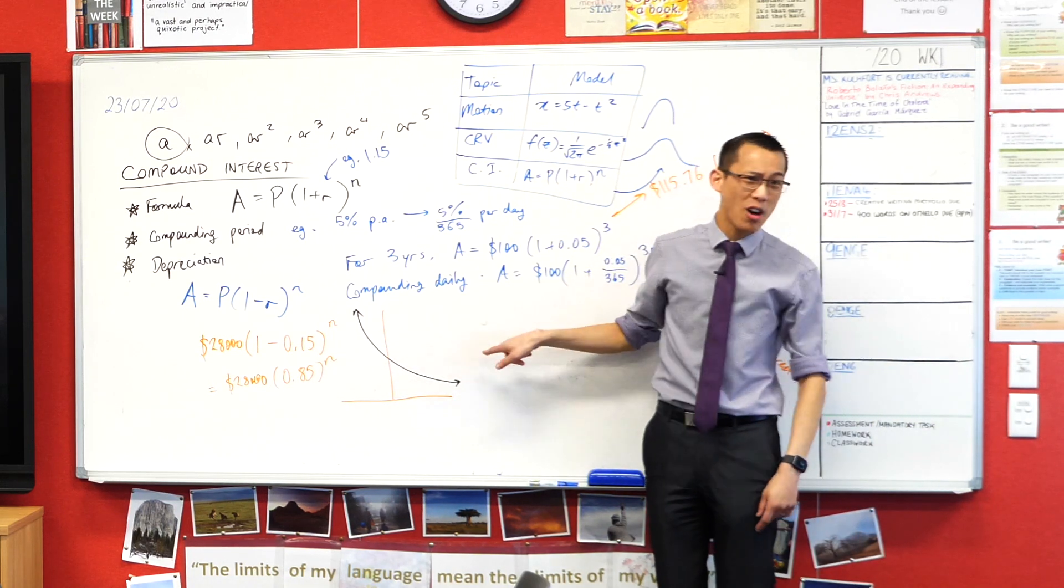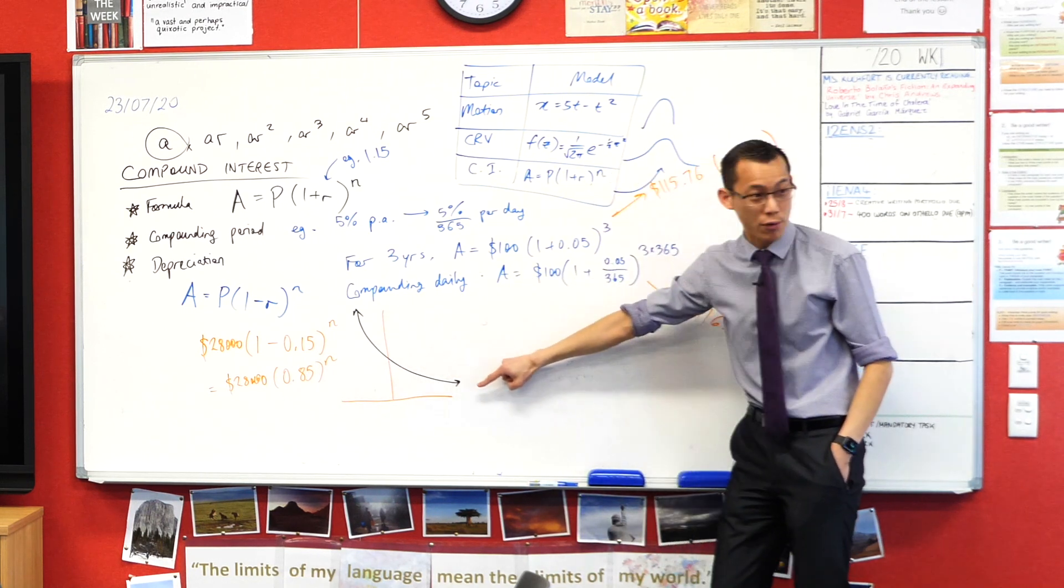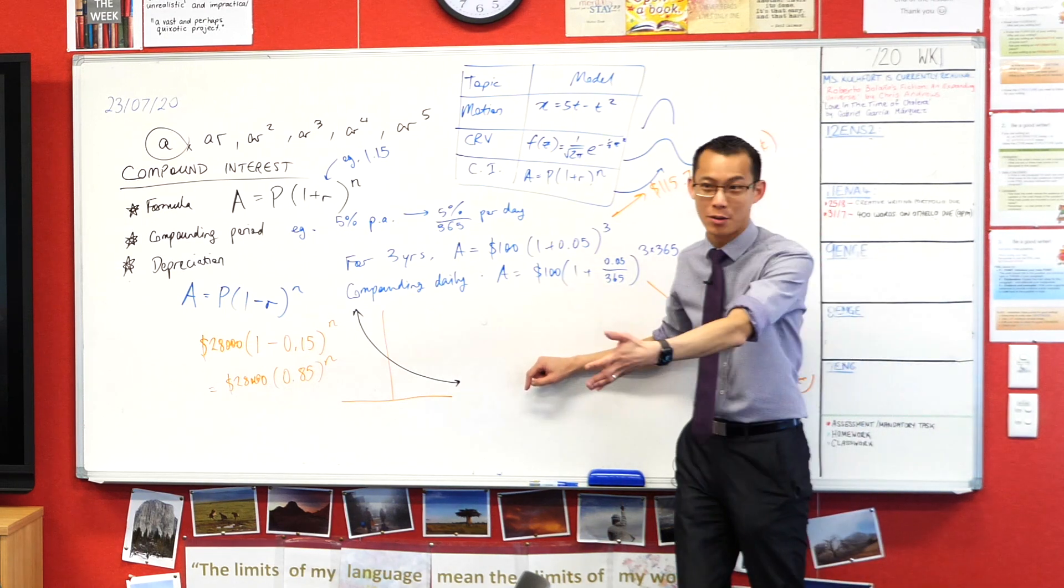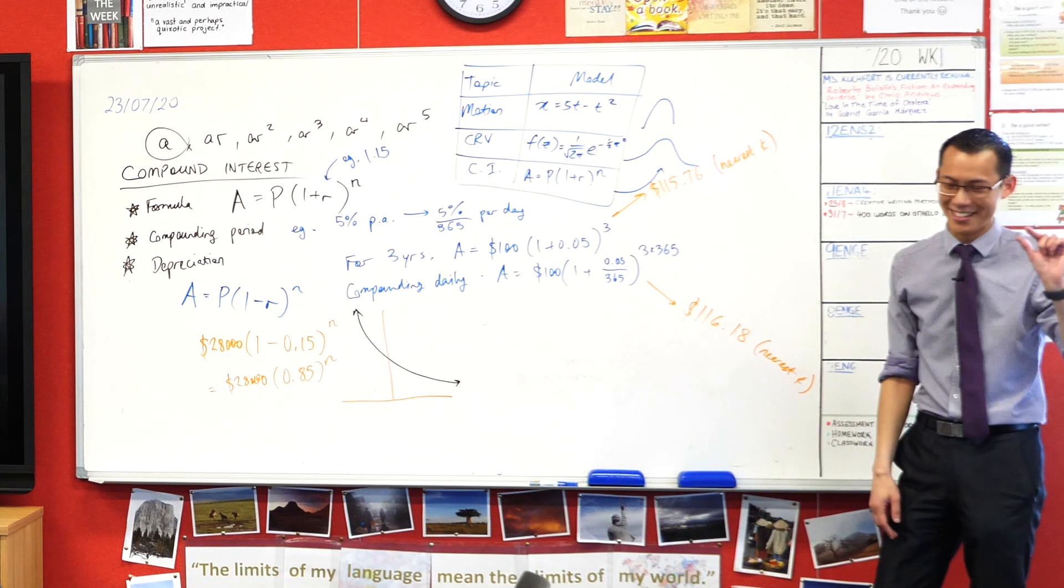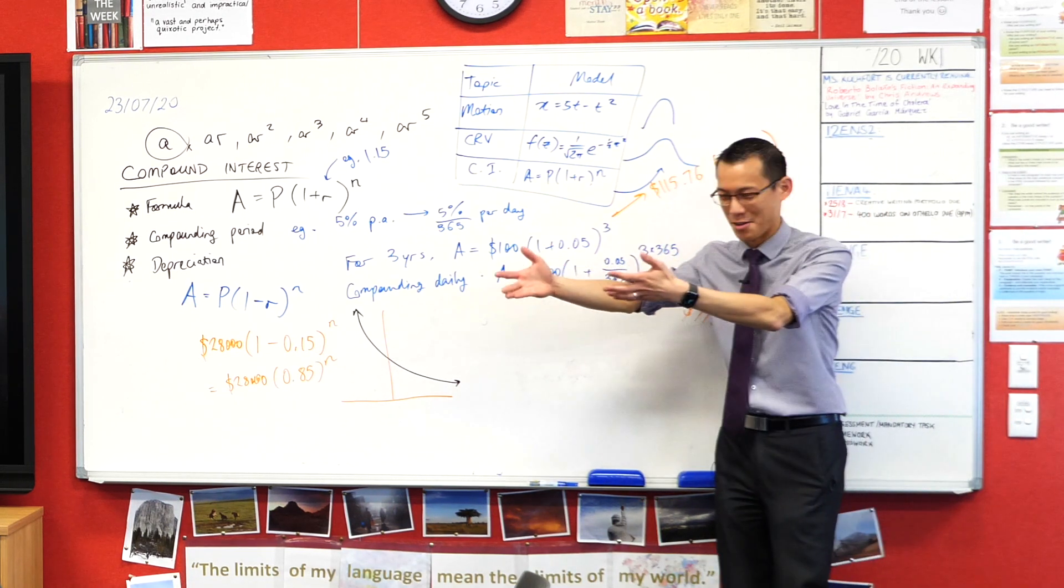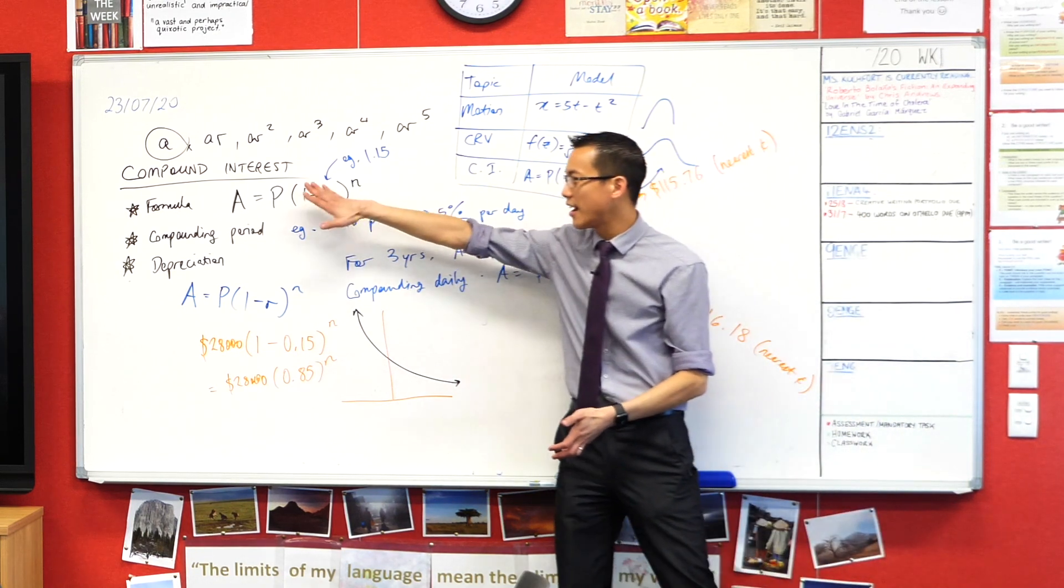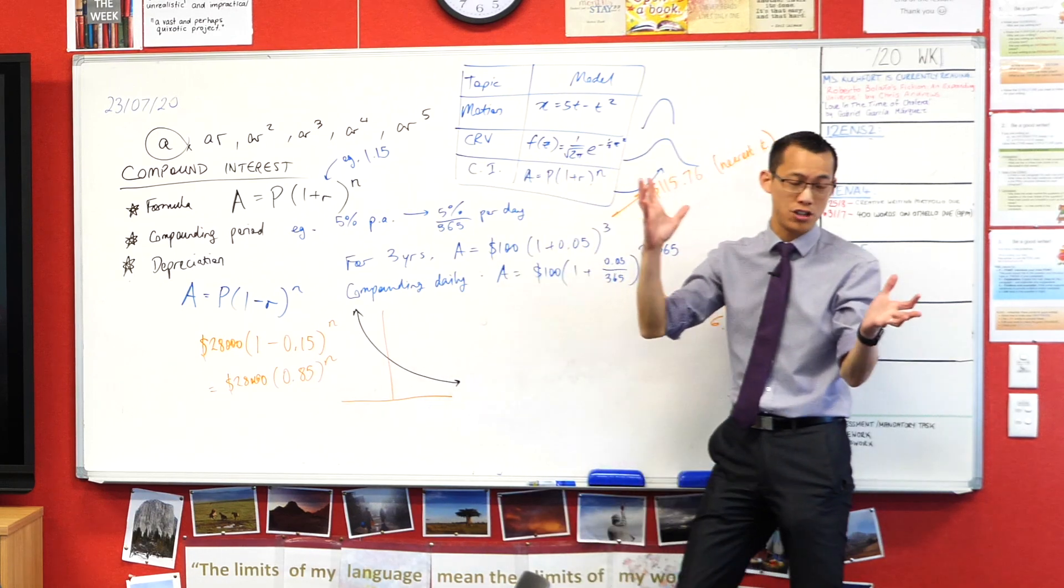The only problem is, coming back to Max's idea, this is a model. This is not actually what's going to happen in reality. After a certain number of years, even though this thing approaches zero, my Corolla will literally be worthless. I'd have to pay someone to take it away because it'd just be scrap. These are the key ideas we need to keep in the back of our minds. We've met them before, but I wanted to refresh your memory.